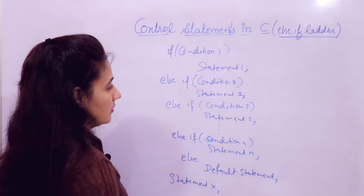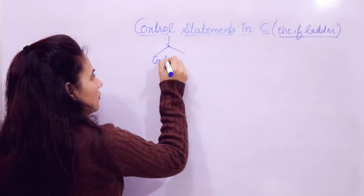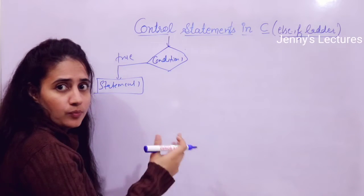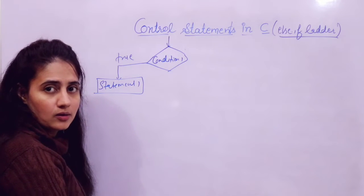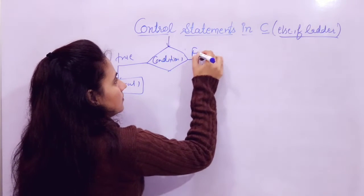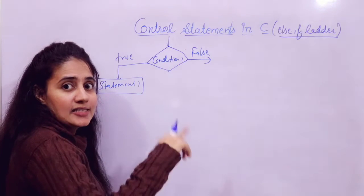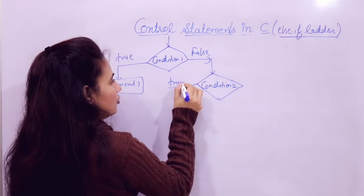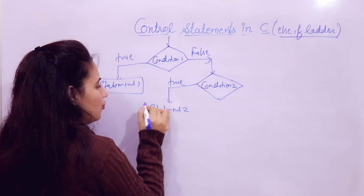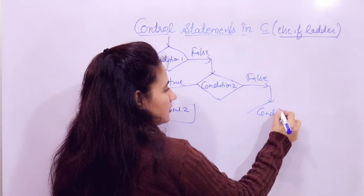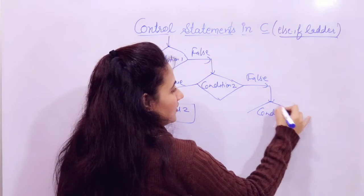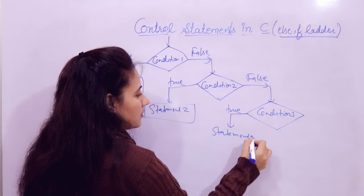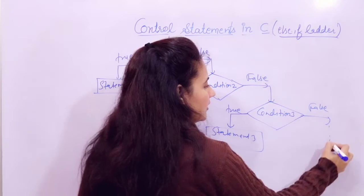Now let me draw a flowchart. This is the sequential flow of execution. First we check the first condition — if it's true, statement one would be executed, and no other conditions would be checked. Finally you reach statement X. If condition one is false, we check the second condition. If that's true, statement two would be executed. If false, we check condition three. If true, statement three would be executed. If false, like this you can check multiple conditions.